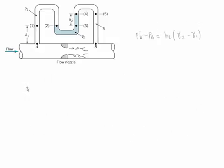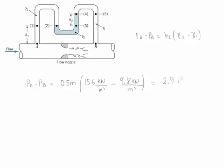The second part of the problem is asking us to evaluate what the actual value of the difference between PA minus PB is going to be. So we're just going to substitute the variables that are given. So PA minus PB is going to be equal to H2, which in this case is equal to 0.5 meters, times gamma 2, gamma 2 is given as 15.6 kilonewtons per cubic meter, minus gamma 1. And gamma 1 is given as 9.8 kilonewtons per meter cube. And the result of this is going to be 2.9 kilopascals.